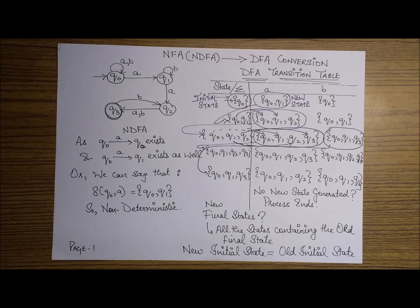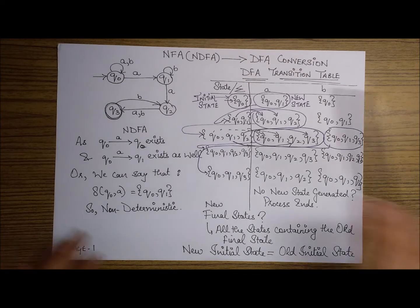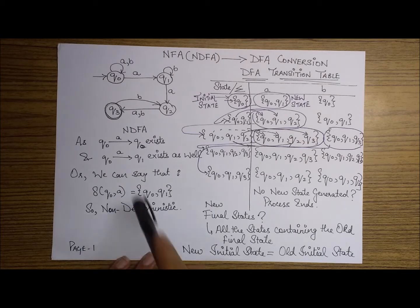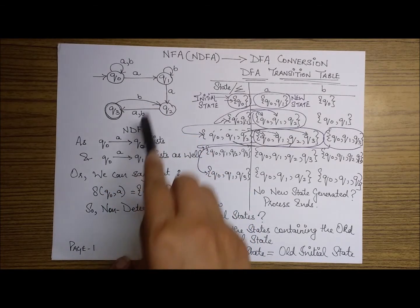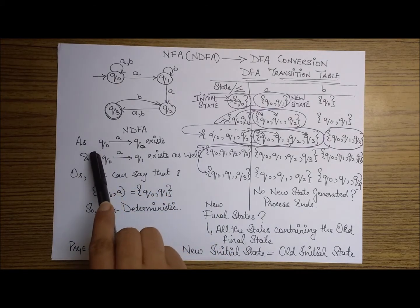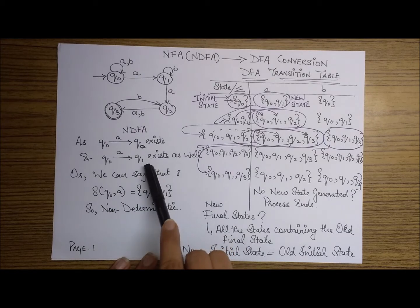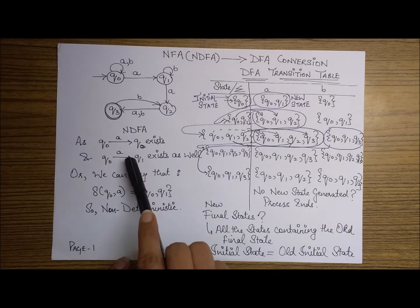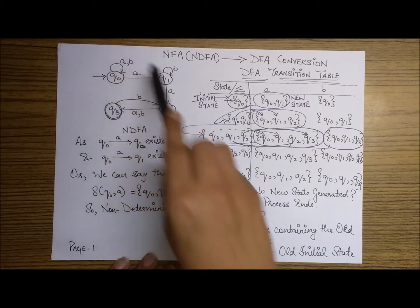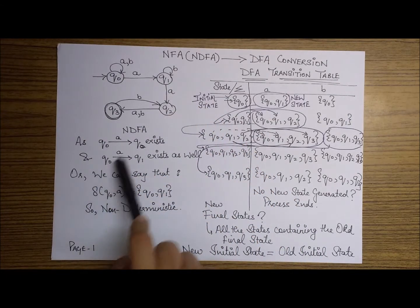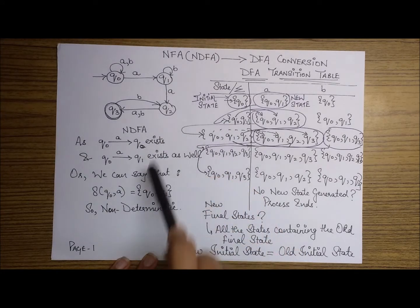Here we have the diagram of an NFA. As you can all see, there are four states: Q0, Q1, Q2, Q3. We can also call it an NDFA. How do we check that it is an NDFA? As you can see, Q0 has two transitions for the same input A — a self-loop from Q0 to Q0, and a transition from Q0 to Q1. Since two transitions exist for the same input from the same state to two different states, we say that it is non-deterministic in nature.